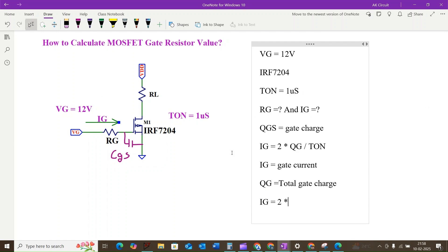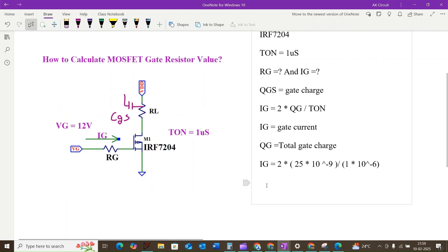We will get IG is equal to 2 times, as per datasheet 25 into 10 to the power of minus 9, divided by TON time which is 1 microsecond, that is equal to 1 into 10 to the power of minus 6 seconds. By calculating this we will get IG is equal to 0.05 amps, which is equal to 50 milliamps.